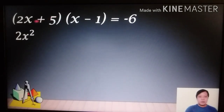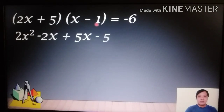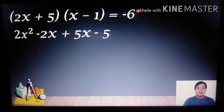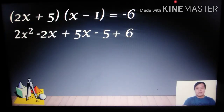Carrying out the multiplication: 2x × x = 2x², 2x × (−1) = −2x, 5 × x = 5x, and 5 × (−1) = −5. To eliminate −6 on the right side, add its additive inverse, positive 6, to both sides.